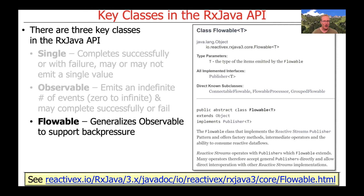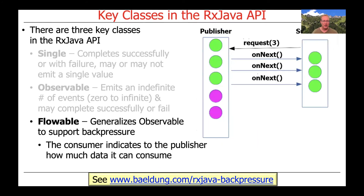The final important class in the RxJava API is known as a Flowable, which came a little bit later after Single and Observable. It's basically like an Observable, except it's been enhanced to support so-called back pressure. Back pressure is a type of flow control that can be used by consumers or subscribers to indicate to a publisher how much data can be consumed. For example, a subscriber might say it can receive three items before it's busy or full. The publisher will then call onNext three times, and ideally the subscriber can process everything. When done, it can request the publisher to send the next chunk or batch. You can read more about back pressure at the link at the bottom of the slide.